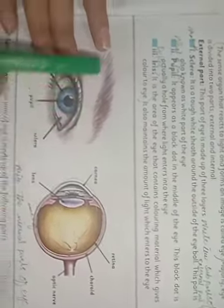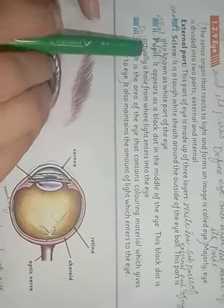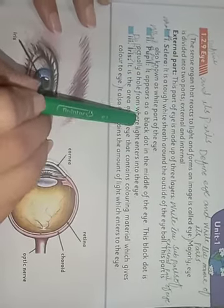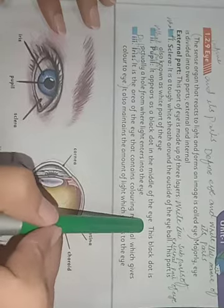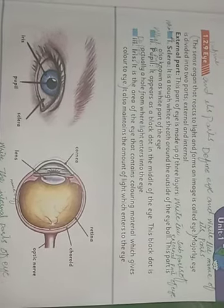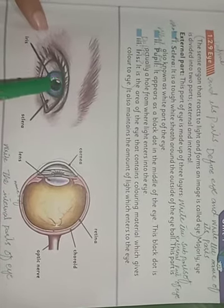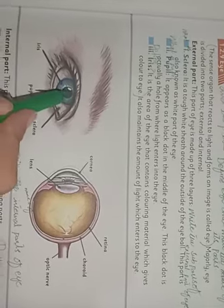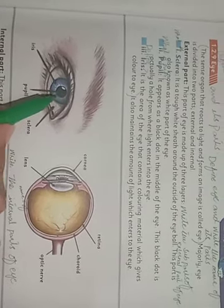Next question: What is the pupil? It appears as a black dot in the middle of the eye. This is your pupil.